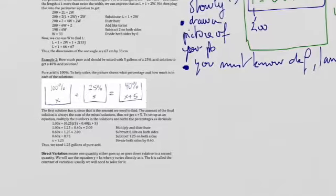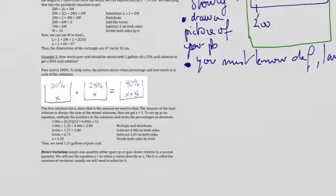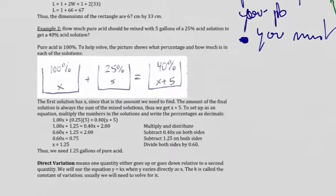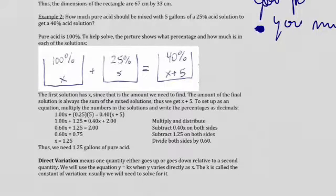As you can see in the example number 2, you have already the representation of your problem. You have already a picture drawn about your problem. Let me read for you the example number 2. How much pure acid should be mixed with 5 gallons of a 25% acid solution to get a 40% acid solution.